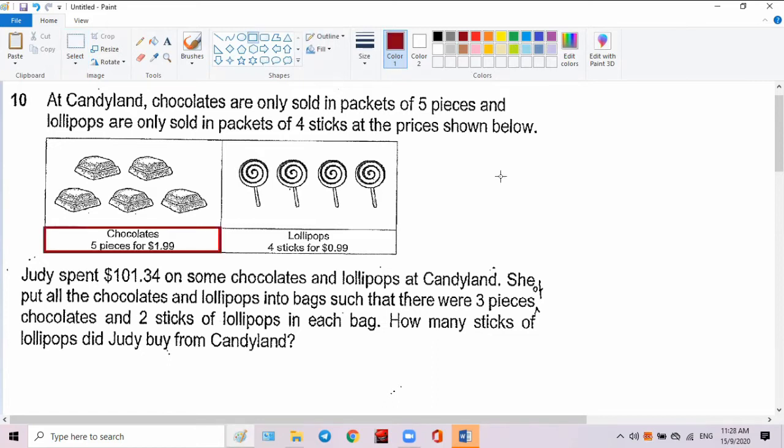At Candyland, chocolates are sold in packets of five pieces and lollipops are sold in packets of four pieces at the prices shown below. It means that chocolate you can only buy five pieces, no other way, no odd pieces you can buy. And every five pieces requires you to pay $1.99. The way you buy lollipops is you can buy them in four pieces. No odd pieces to be sold to you. You cannot buy one piece or two pieces, but you must buy them in four, and four pieces cost $0.99.